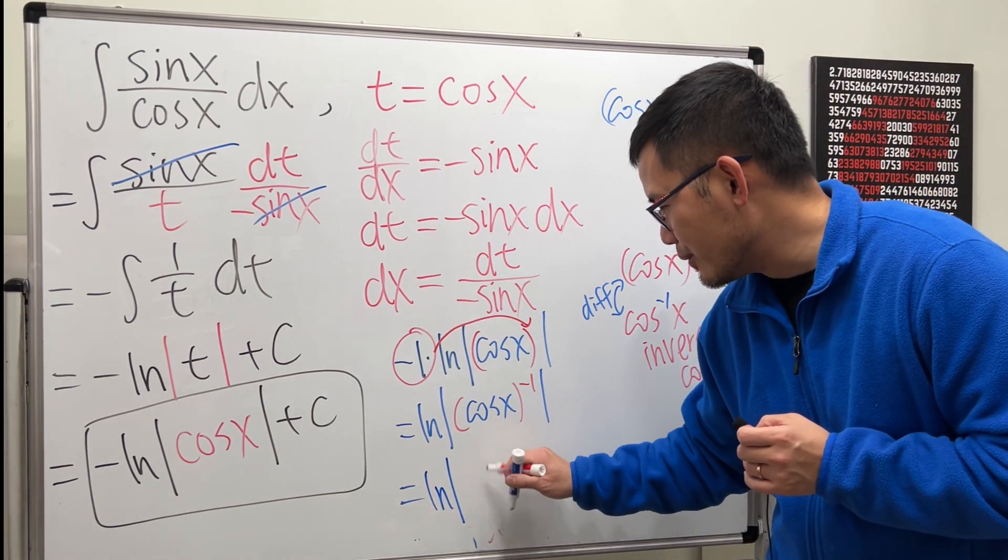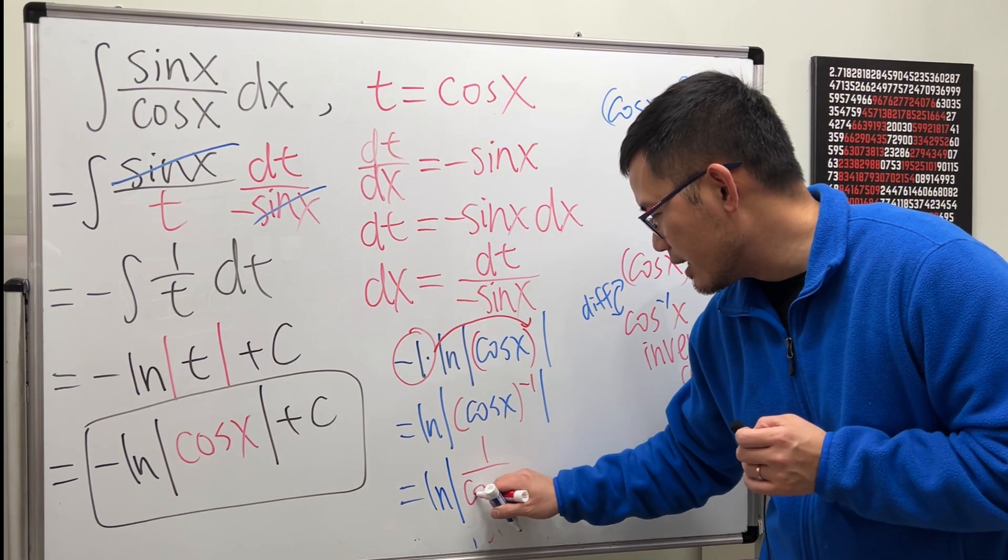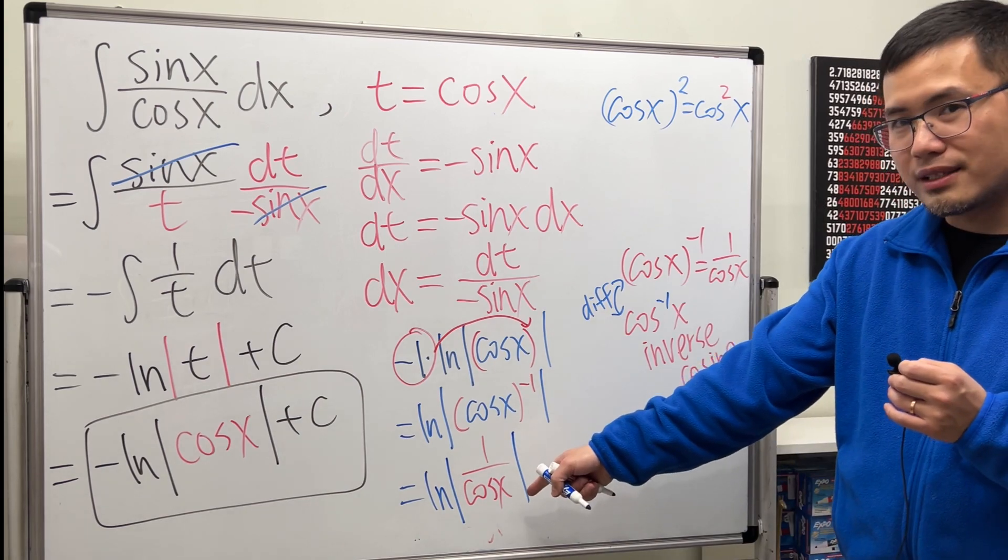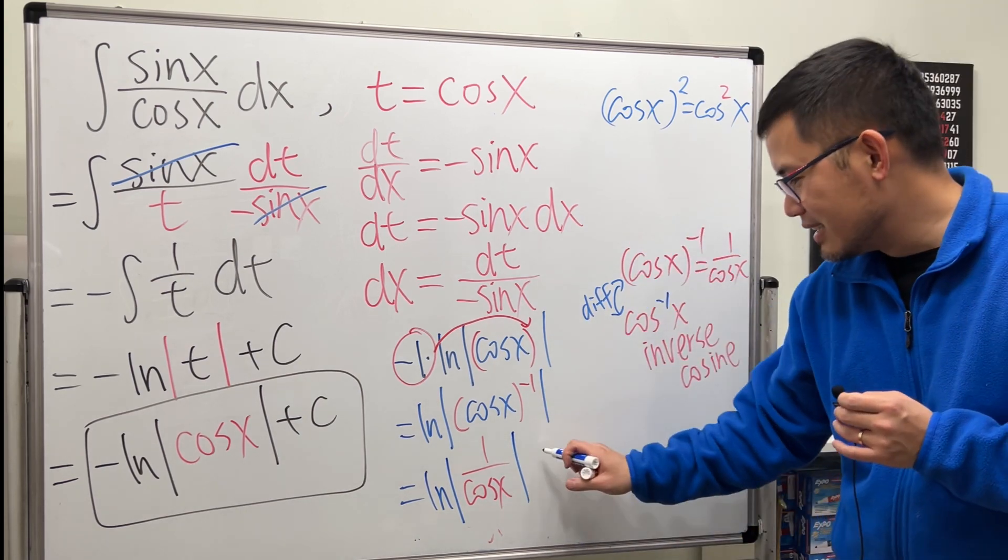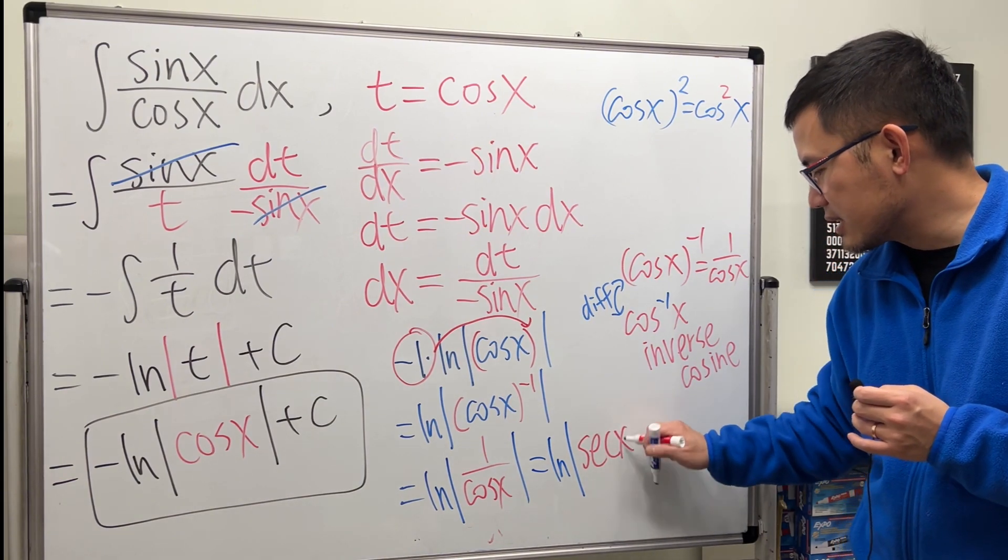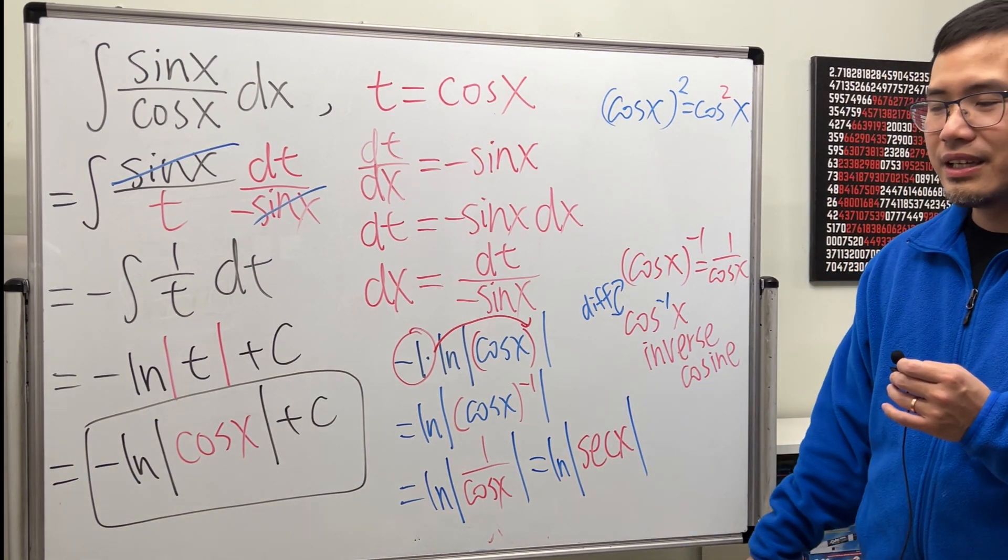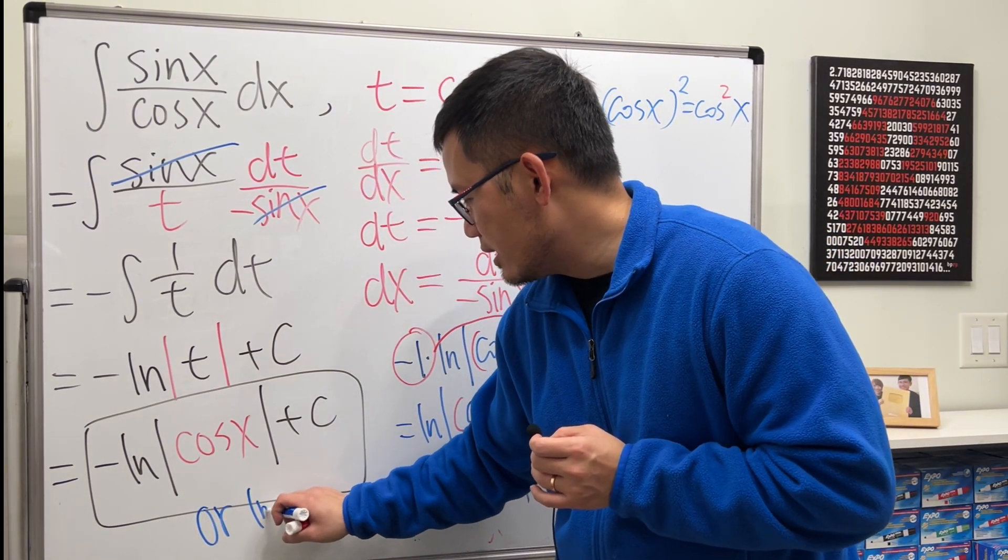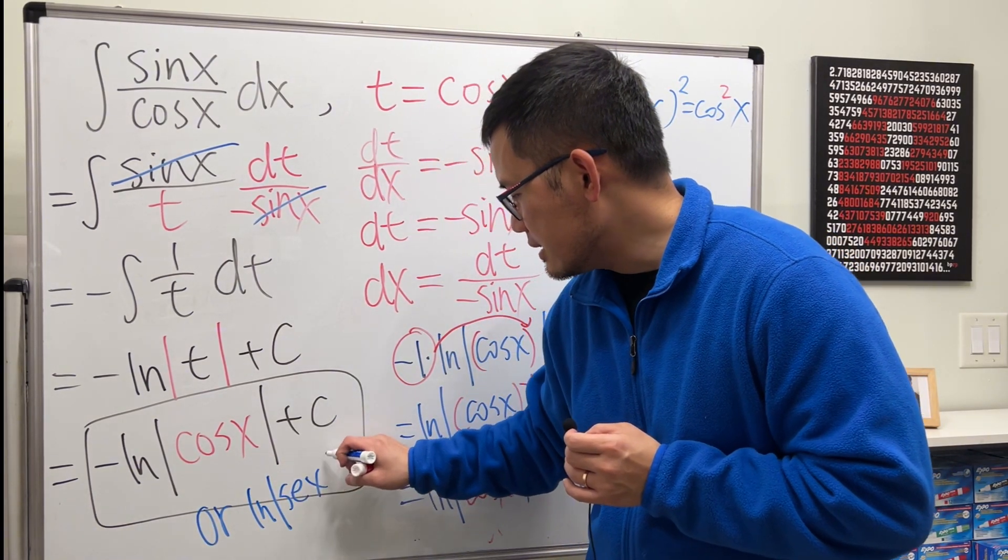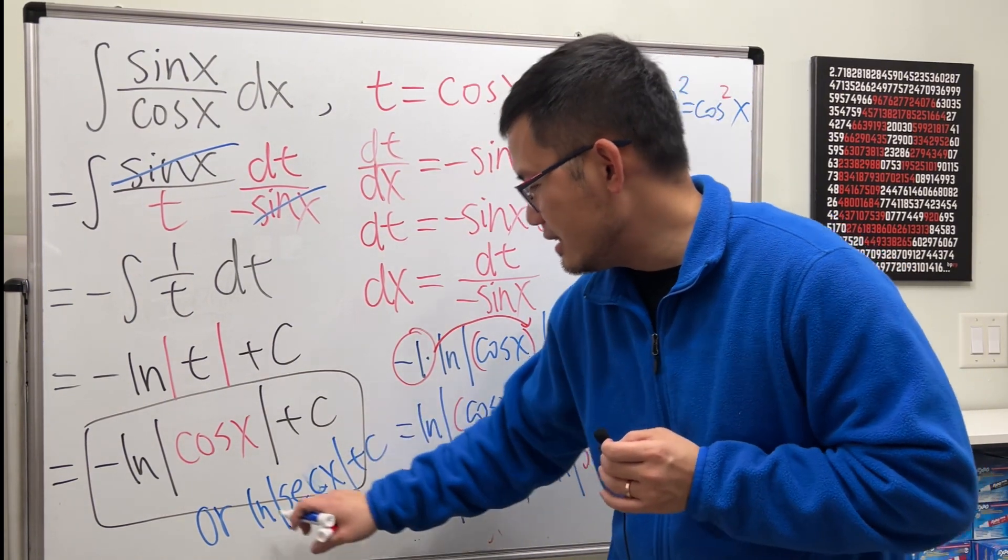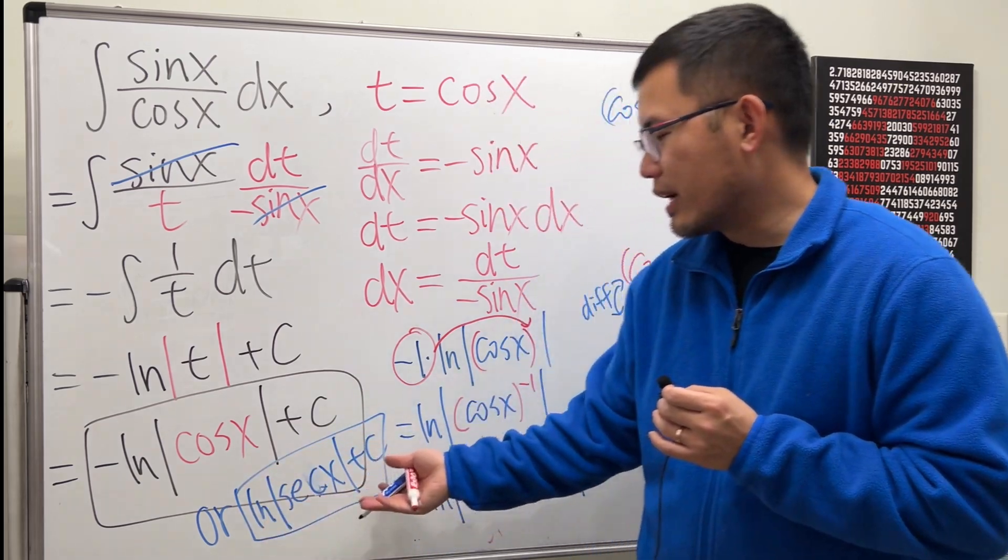So, ln absolute value of 1 over cosine x. Yeah? And what's 1 over cosine x? Secant x. So, this is ln absolute value of secant x. Just like that. So, you can also insert this as ln absolute value of secant x plus c. This is okay as well.